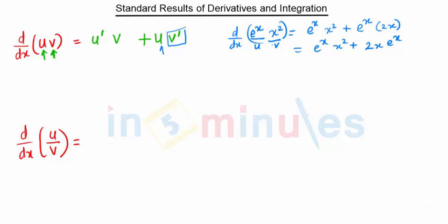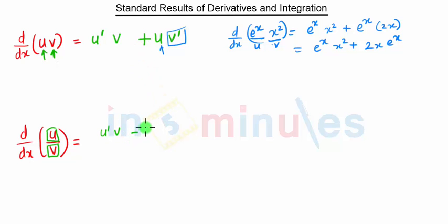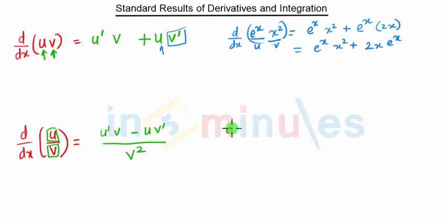Similarly, when we have two terms — one in the numerator and one in the denominator — and we have to take the derivative, we follow the u/v rule. The u/v rule states: first take the derivative of u, keep v as it is, minus keep u as it is times the derivative of v, all divided by v².